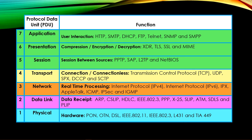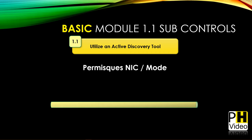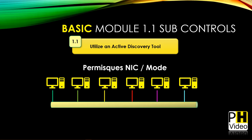Now let's talk about utilizing an active discovery tool and what it actually means. To understand this, you need to understand the concept of a promiscuous NIC — network interface card — or promiscuous mode. In a very high-level view, imagine a bar representing your network with a few computers all sitting there communicating.